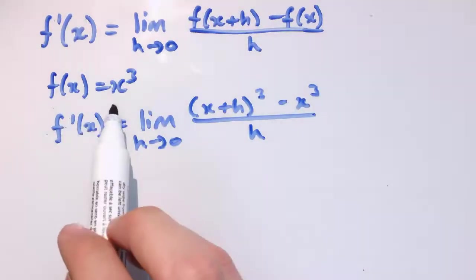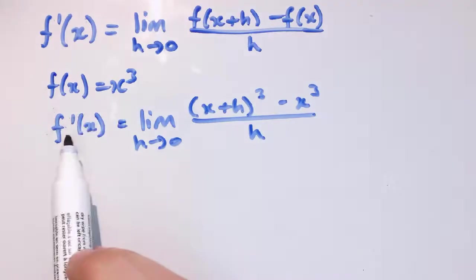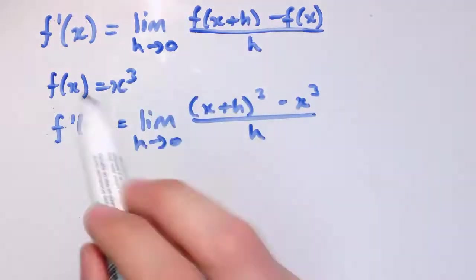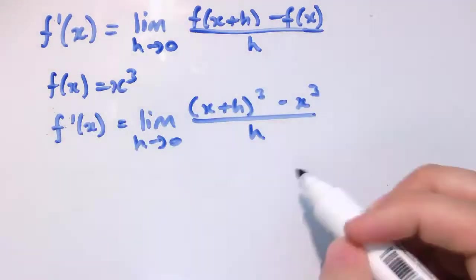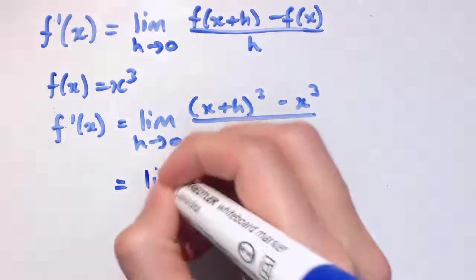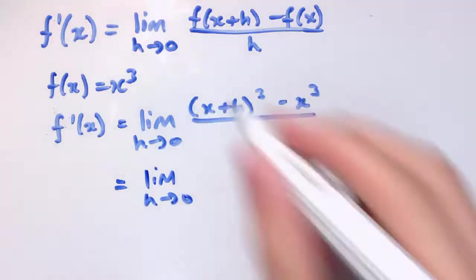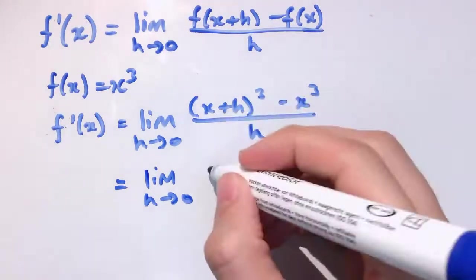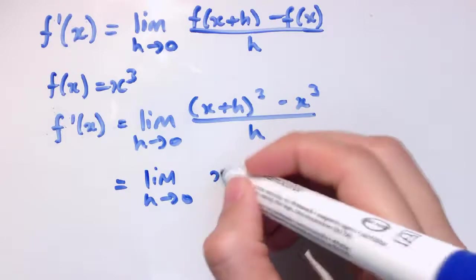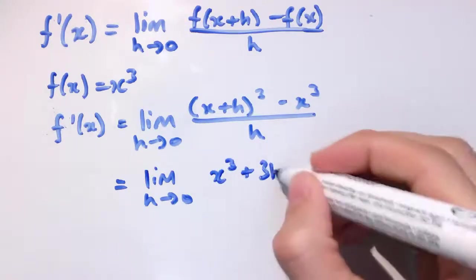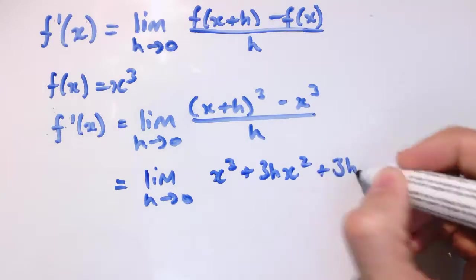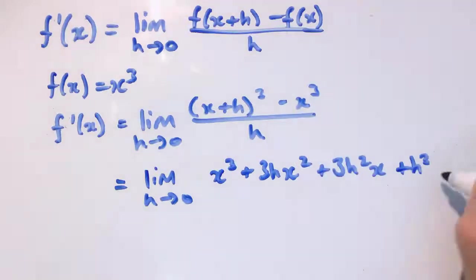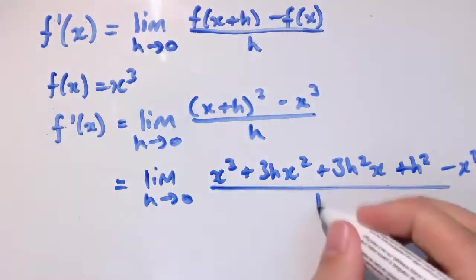It's very similar for x³. With f(x) = x³, f'(x) is the limit as h tends to 0 of (x+h)³ minus f(x), which is x³, all divided by h. Multiplying out the bracket, and you could use the binomial expansion or however you prefer, we get x³ + 3hx² + 3h²x + h³, and then minus x³, all divided by h.